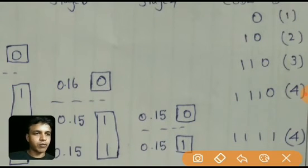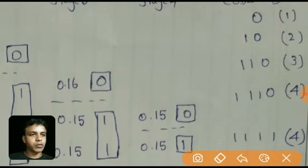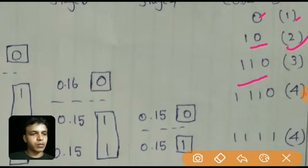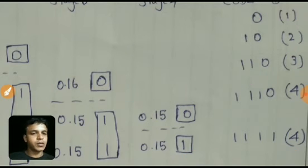For symbol x1 the codeword is 0, so the number of bits is 1. For symbol x2 the codeword is 1 0, so the number of bits is 2. For x3 the codeword 1 1 0 has 3 bits. I have written the number of bits for all symbols in this way.